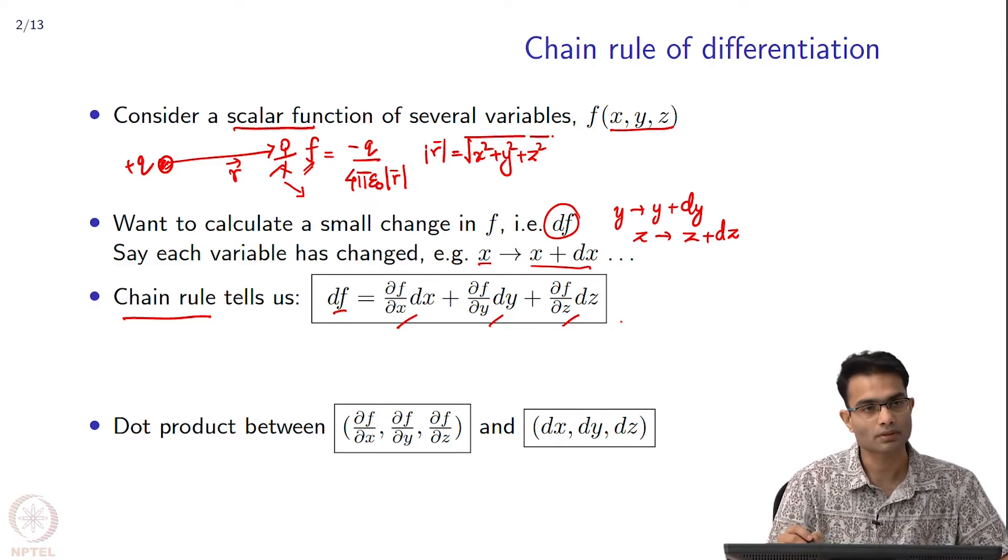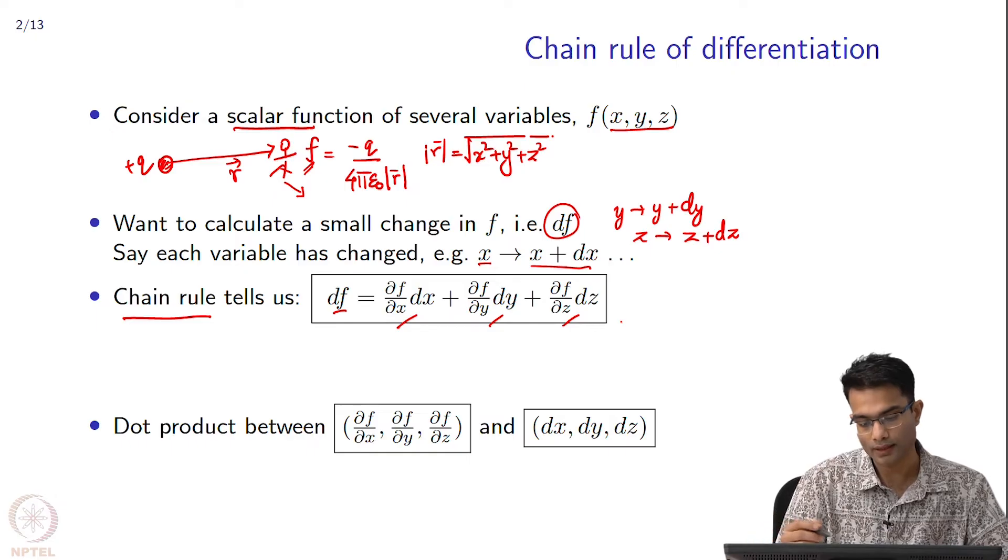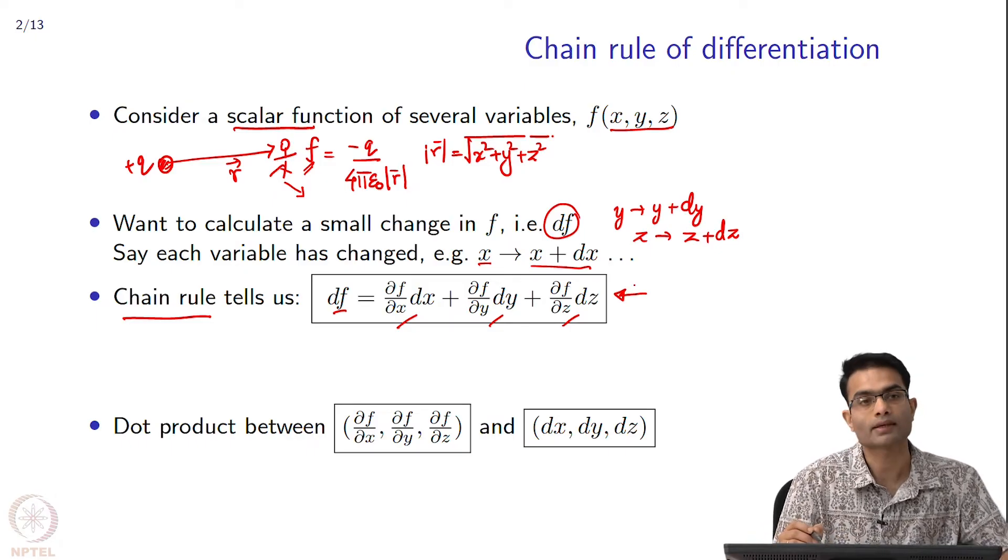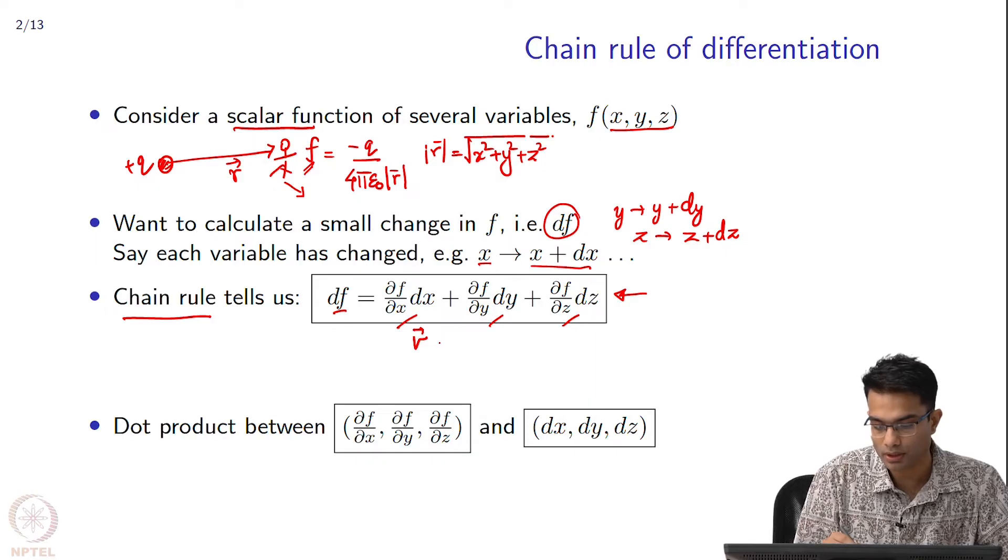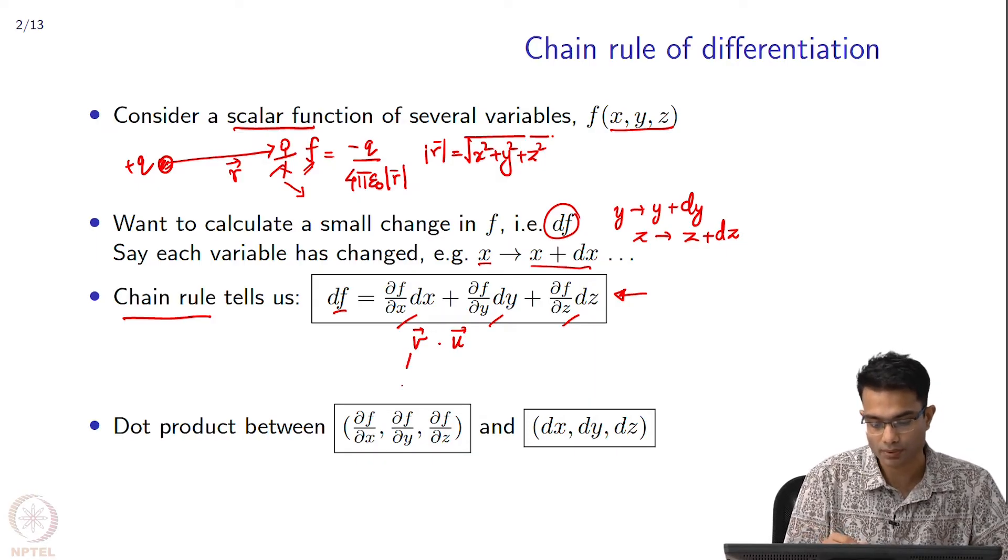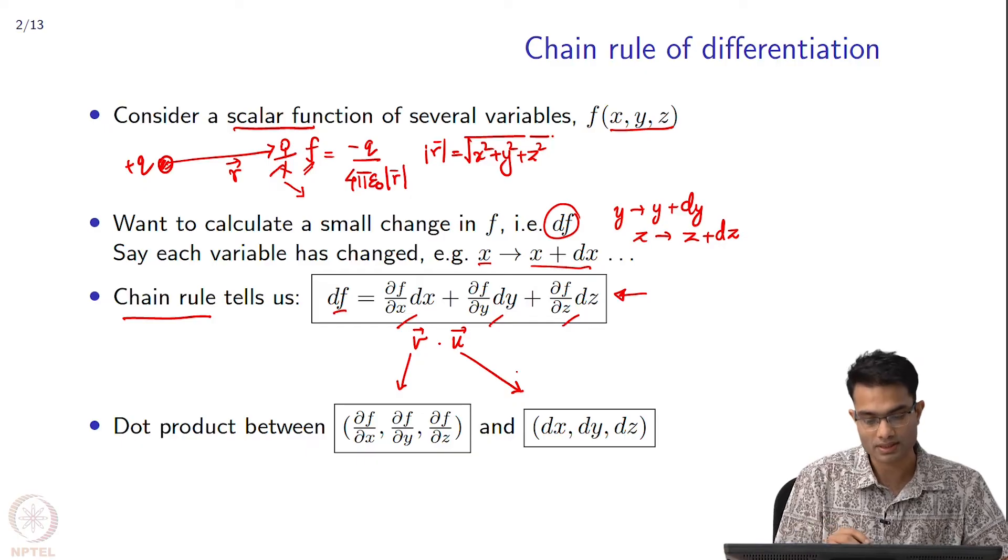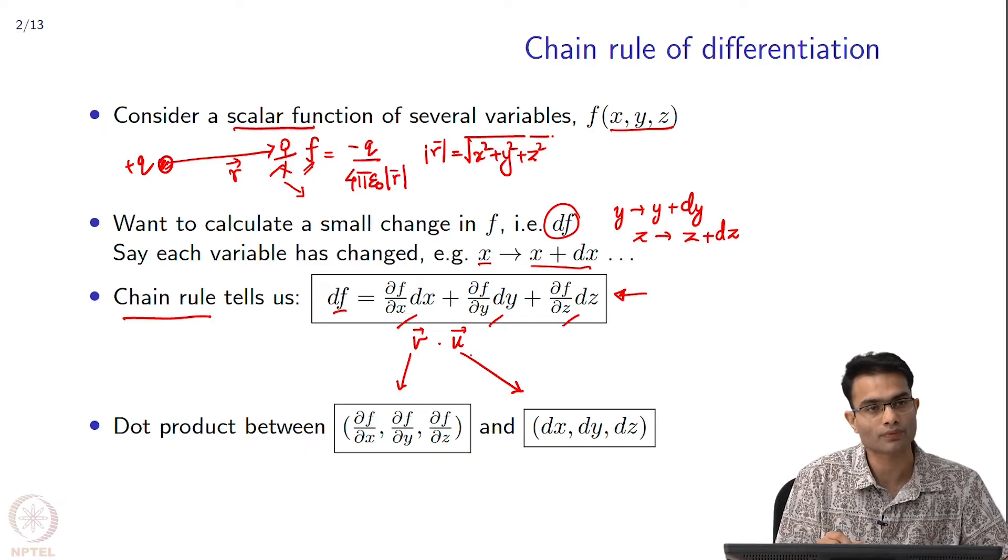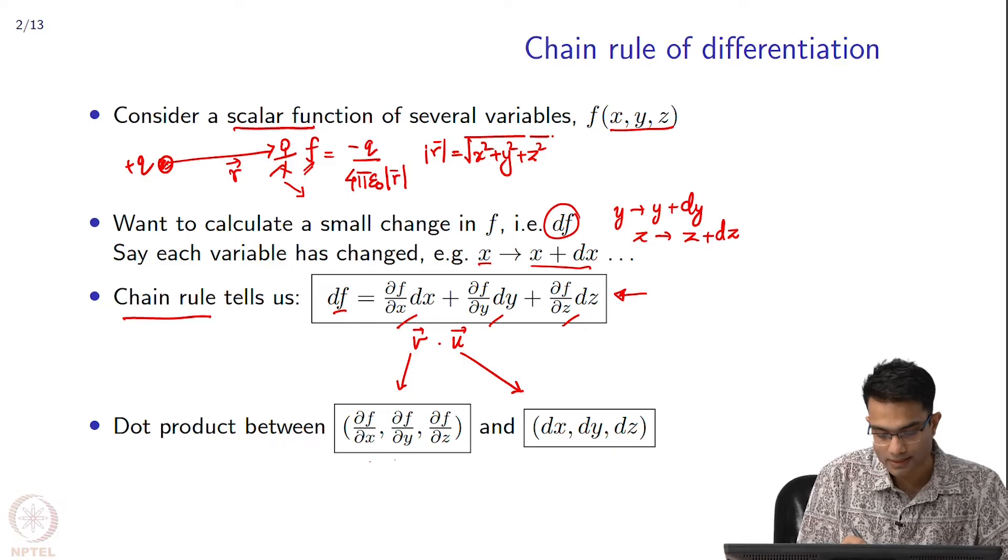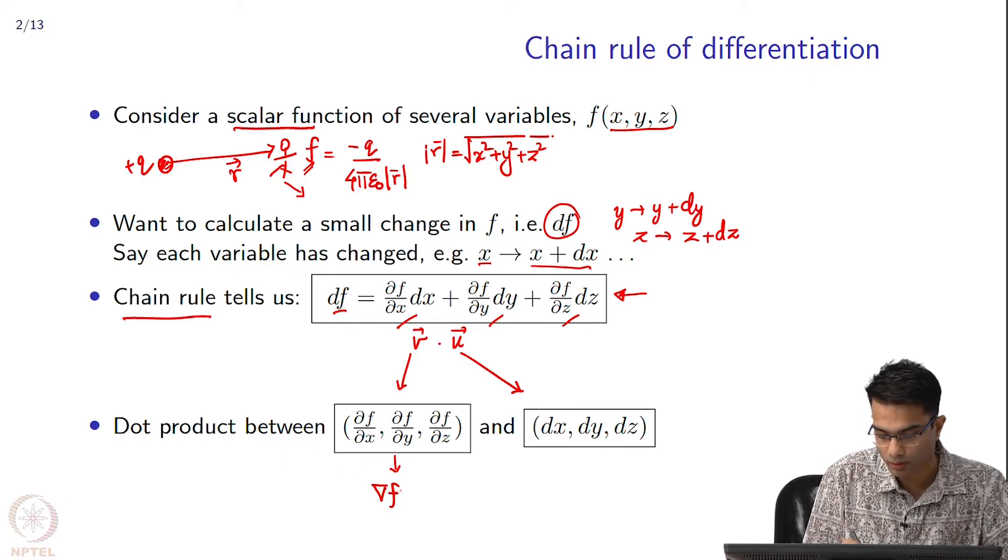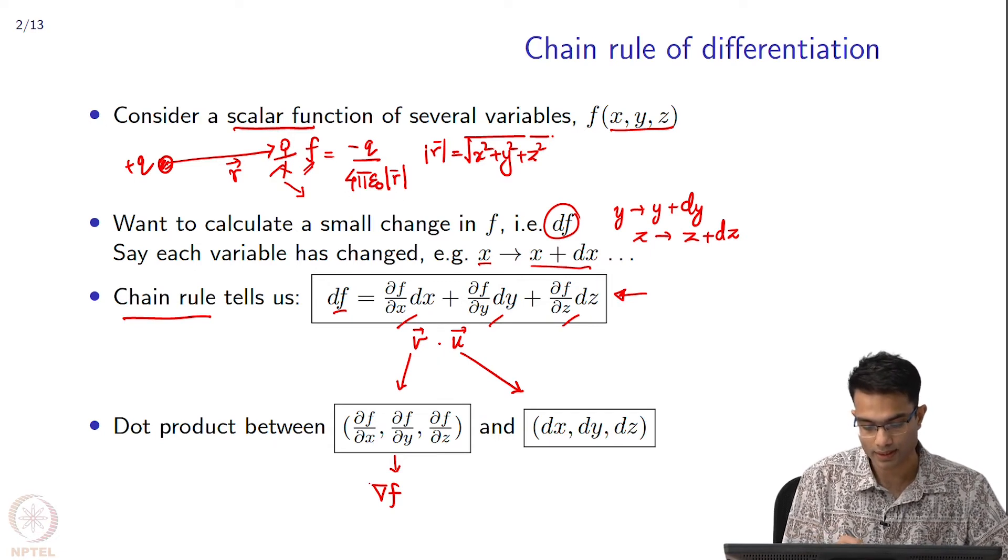When I look at this expression, while this is correct, there is a more convenient way of looking at the same thing. If I look at this expression, I can think of it as the dot product between two vectors. I can say that this is the dot product between two vectors v dot u. v could be this vector and u could be this vector. What I have got is this change df is the dot product of two vectors, and this vector over here is something which appears time and again. This is defined as the gradient of f. It is a vector and it has three components over here, and this is the shorthand notation for it. This over here is the displacement.